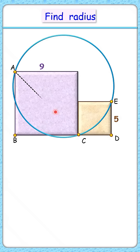Let's start by drawing the diagonal BC here. By formula it will be 9 root 2 centimeters. Same way diagonal EC will be 5 root 2 centimeters.